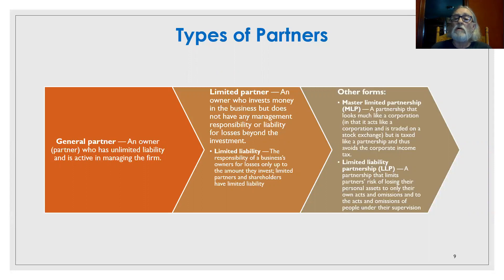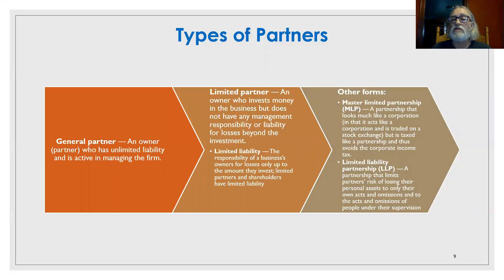We also have the master limited partnership. This is a very special type — we don't see a lot of them and they're for specialized industries or events. They look a lot like a corporation; they get stock traded, but they get taxed differently than corporations do. There are some master limited partnerships in the energy sector with companies that own pipelines, and these large entities use this structure to try to avoid paying the full amount of corporate income taxes.